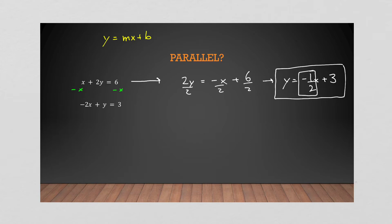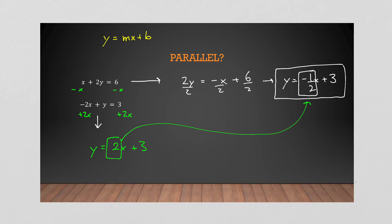For the second equation, add 2x to both sides and we get y = 2x + 3. That slope is 2, which is not the same as -½, so these lines are not parallel. They're actually something special, but we'll get to that in a couple of slides.